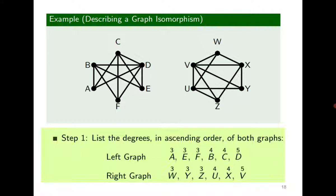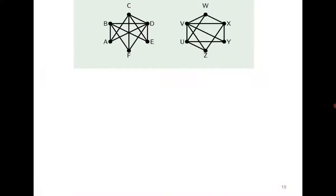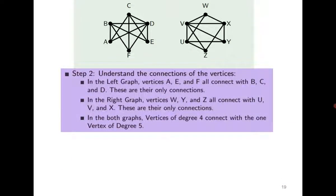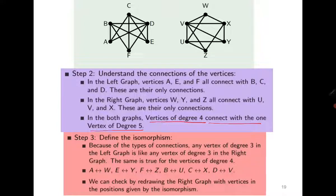Once they have the same degree sequence, we need to observe the relations between same-degree vertices and different-degree vertices. If everything looks consistent, we start mapping vertices from one graph to the other, especially those with the same degrees, to obtain the required bijection. We can observe that vertices of degree 4 connect with one vertex of degree 5 in both graphs, and so on. Based on this, we define a bijection, and since the bijection exists, the given graphs are isomorphic.